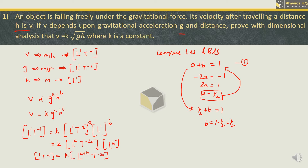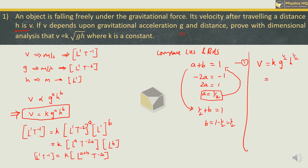Let us put the values of a and b into the equation. We get v = k · g^(½) · h^(½). Now, a power of ½ is nothing but a square root. So we can write v = k√(gh). We have proved this by dimensional analysis.